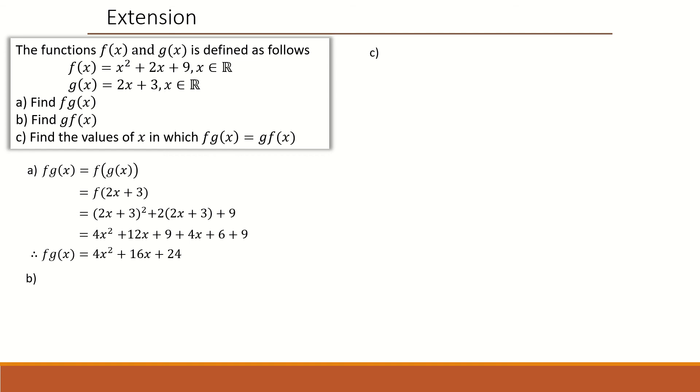For part b, do the exact same thing, but instead of 2x plus 3 being an input in function f, in function g, x squared plus 2x plus 9 is an input. And expand and factorize to give you 2x squared plus 4x plus 21.